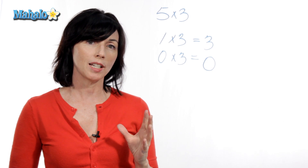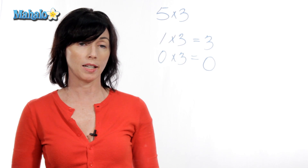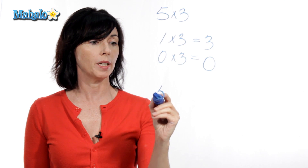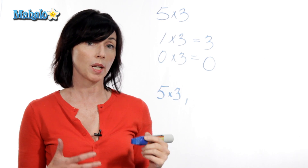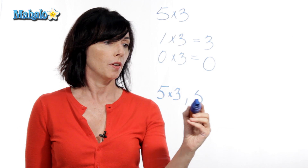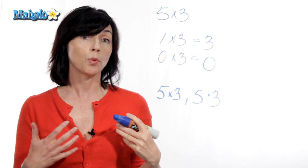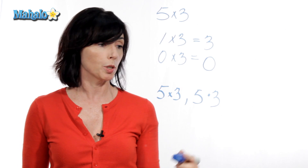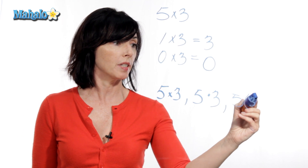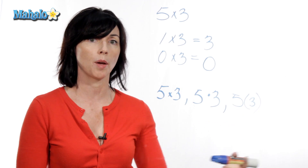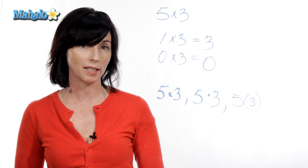Now, multiplication gets written in various ways. Sometimes they'll use this little x as the multiplication symbol — that's one way. We can write five times three. But they also will sometimes use a little dot: five times three, like that. And parentheses will also indicate multiplication. So, five with a three in parentheses also means five times three.